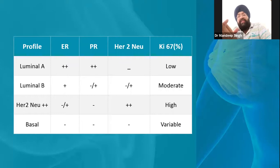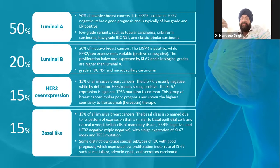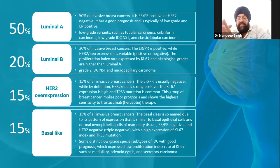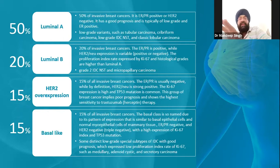The categorization of Luminal A, Luminal B, HER2, and basal actually helps in decision making. Fifty percent of breast cancers are Luminal A, which is a good prognostic variety — very high hormone positivity, low grade. The majority of specific histopathological ductal cancers like tubular, cribriform, and even lobular fall in Luminal A. In Luminal A, the basic treatment lies with surgery and hormonal therapy; chemotherapy and radiation are basically adjunct.